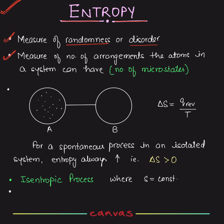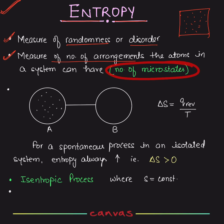How do you measure randomness? Think about it — in a particular box or container, there are some gas particles. These gas particles can remain in a number of arrangements. Like in class, if you think there are 20 students, those 20 students are sitting in their positions. If a child moves to the other side, that will be a new arrangement. So how many possible arrangements can there be for those atoms which are part of the system? That total number of arrangements is the number of microstates.